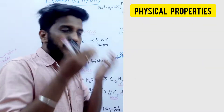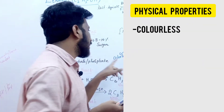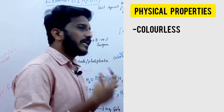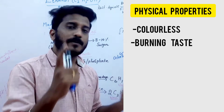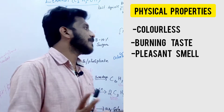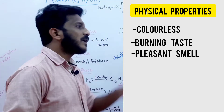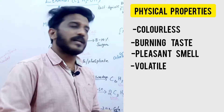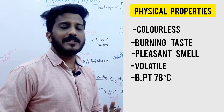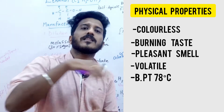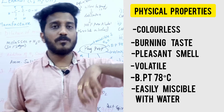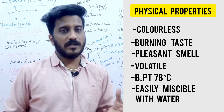For physical properties: ethanol is a colorless liquid with a burning taste and a pleasant smell. It is volatile in nature with a boiling point of 78 degrees Celsius. It is miscible with water.